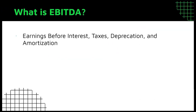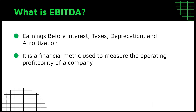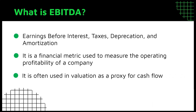EBITDA is an acronym for earnings before interest, taxes, depreciation, and amortization. It is simply a financial metric used to measure the profitability of companies. Investors and analysts often use EBITDA in the valuation of companies as a proxy for cash flow — meaning it measures how much cash a company has generated from its business operations.